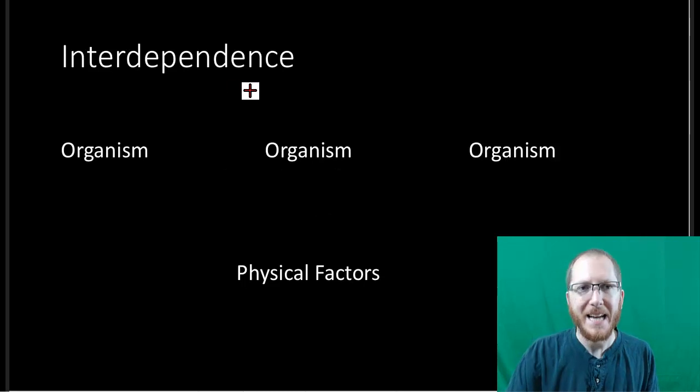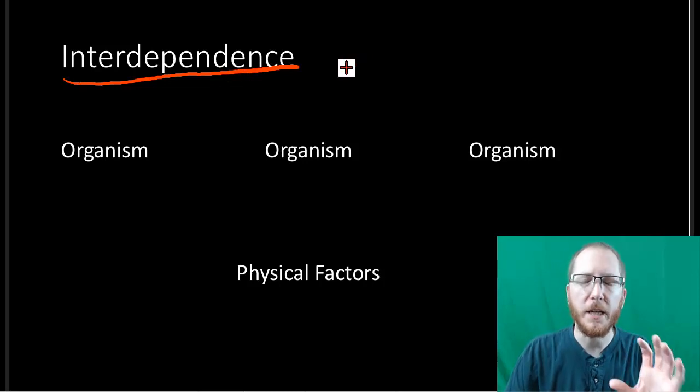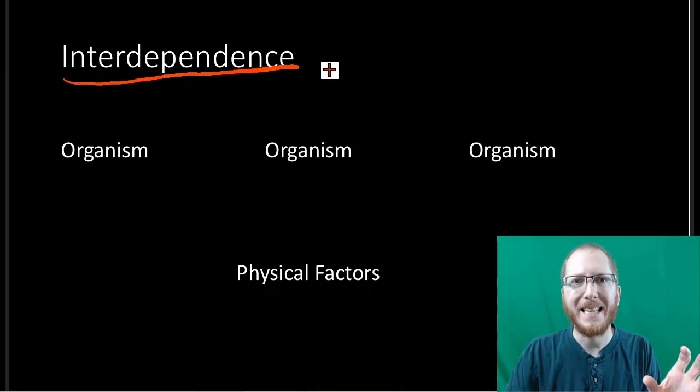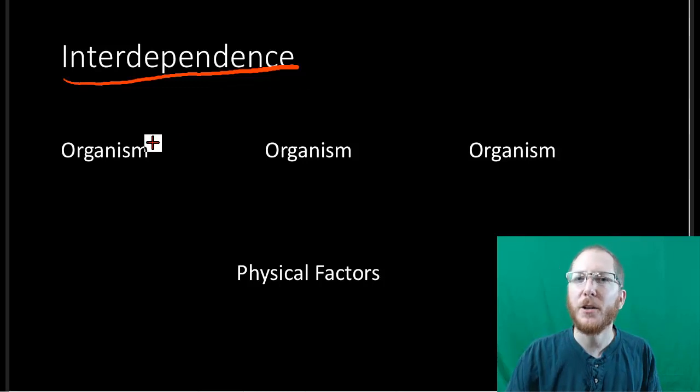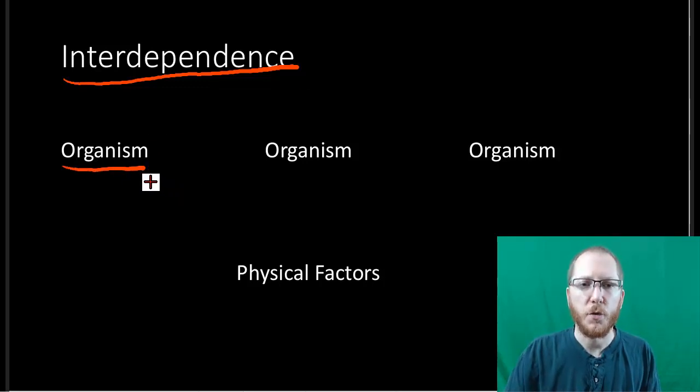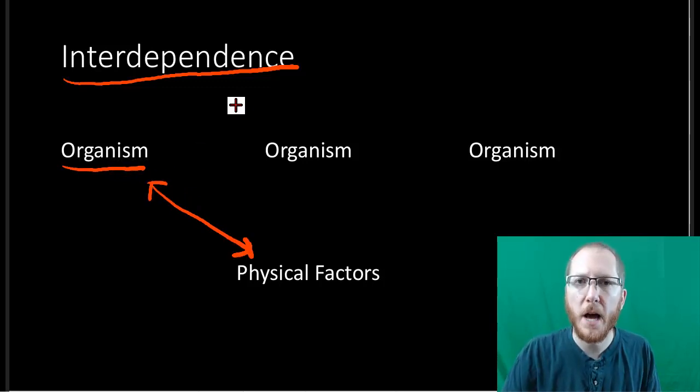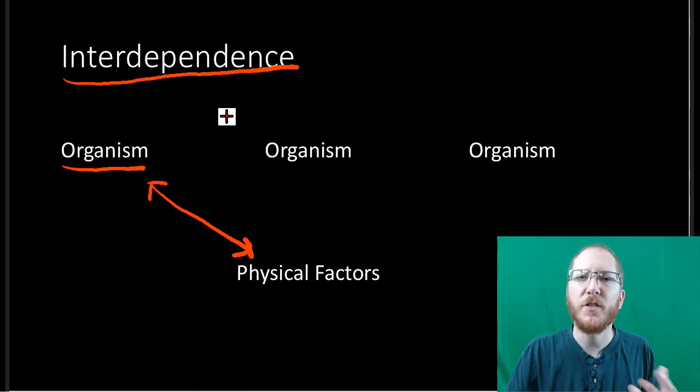Starting off, the idea of interdependence is just that organisms can't survive on their own. No organism, which is just a single individual living organism, can survive without interacting with the environment and with one another. Now these interactions can vary. You could have a plant that's going to interact with physical factors like the nutrients in the soil, that's why we fertilize. They'll interact with water, because obviously plants need water, and they'll interact with sunlight so they can do photosynthesis to make their food.